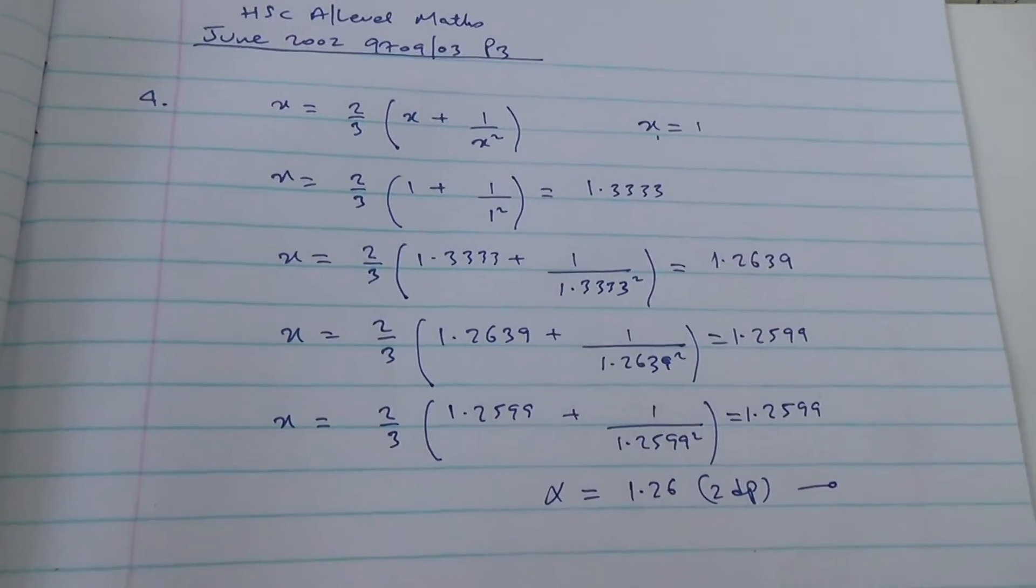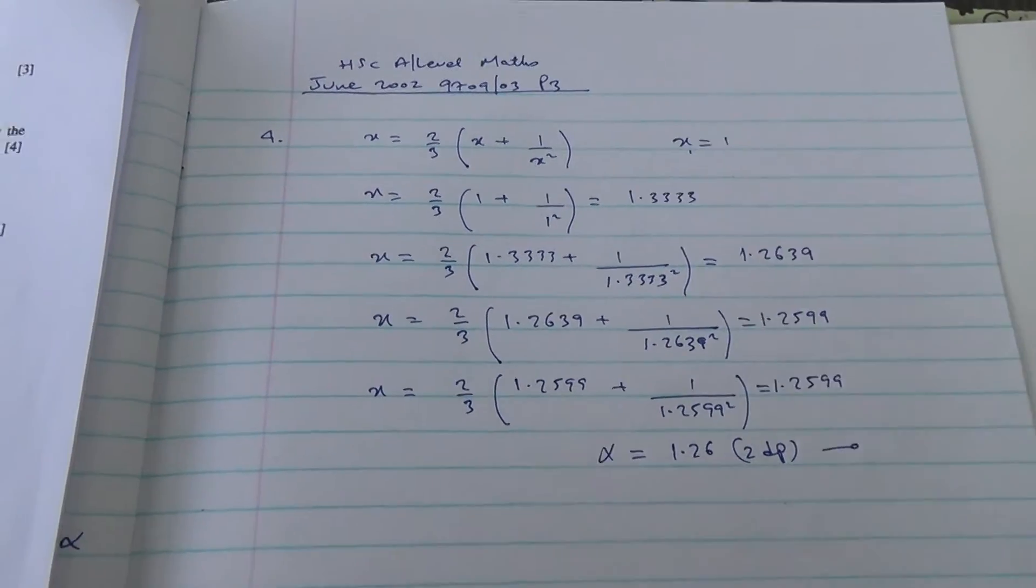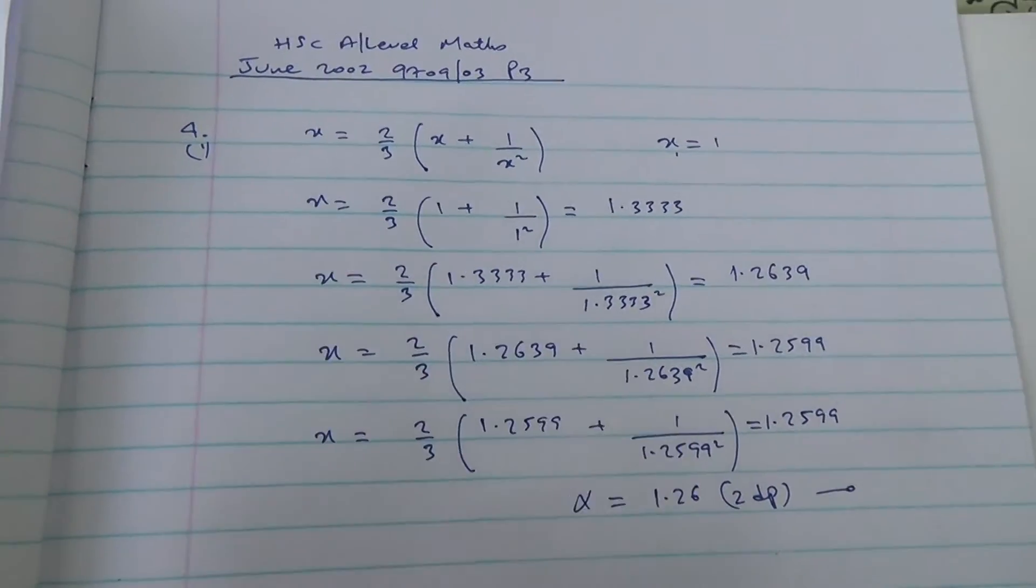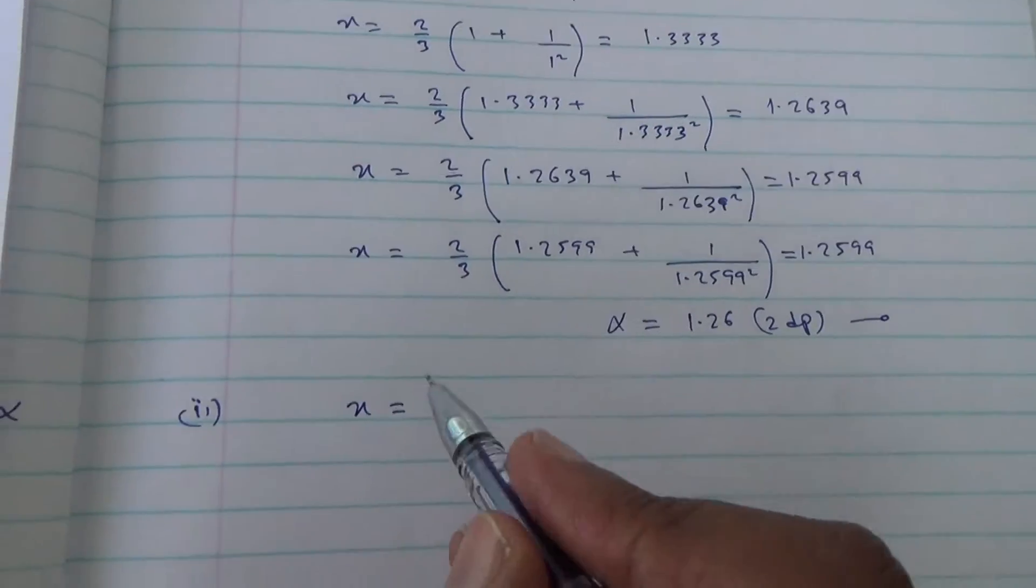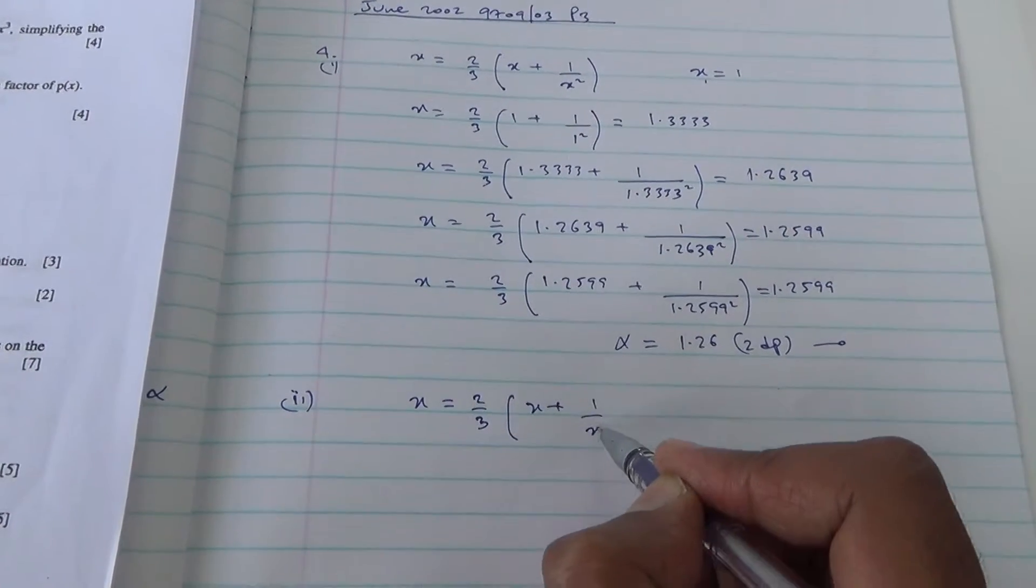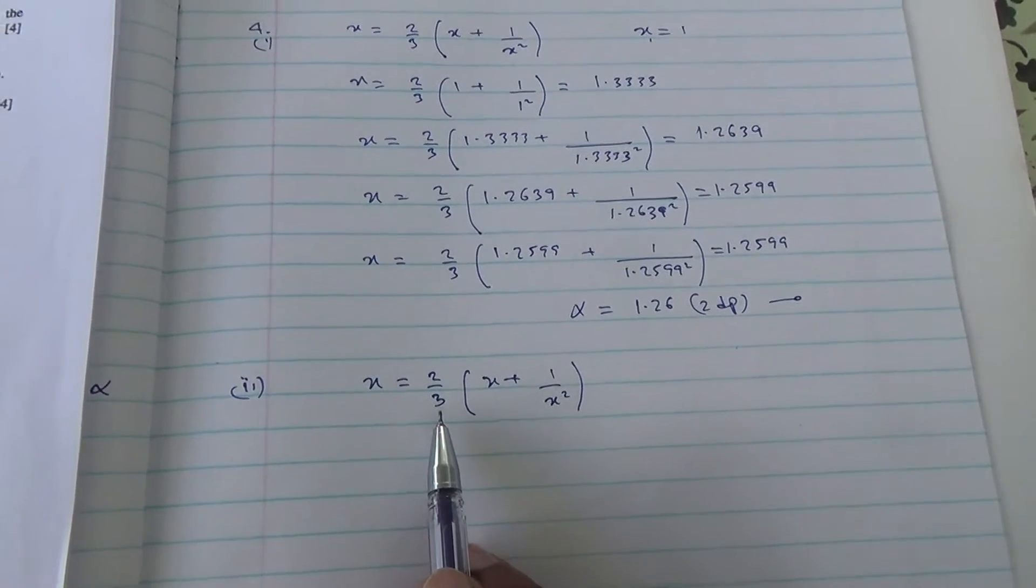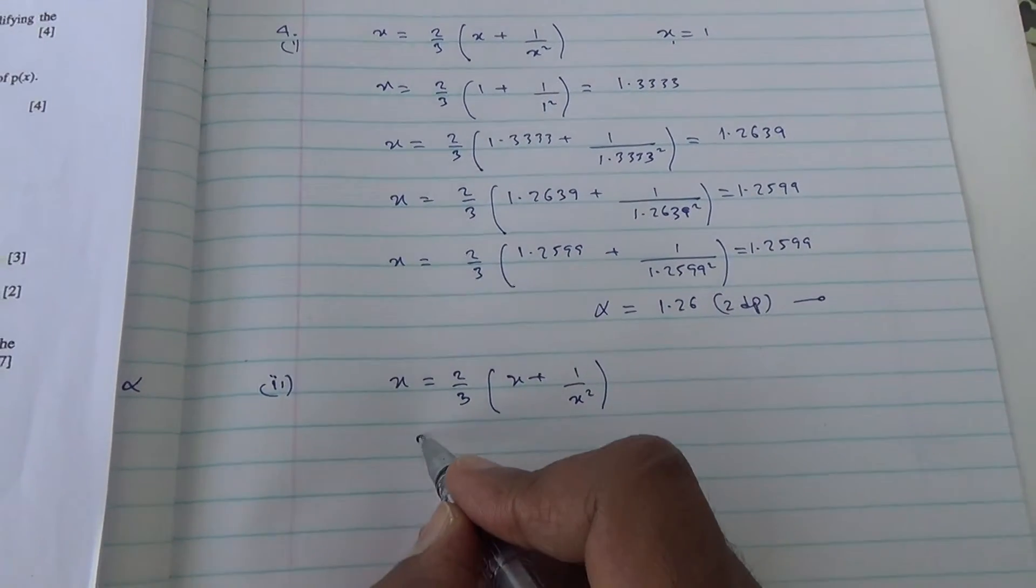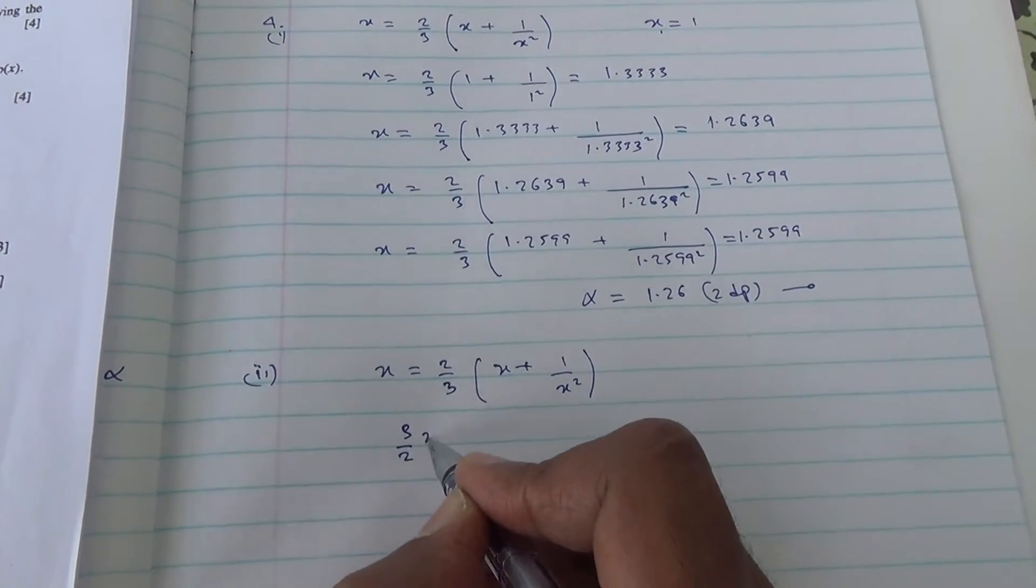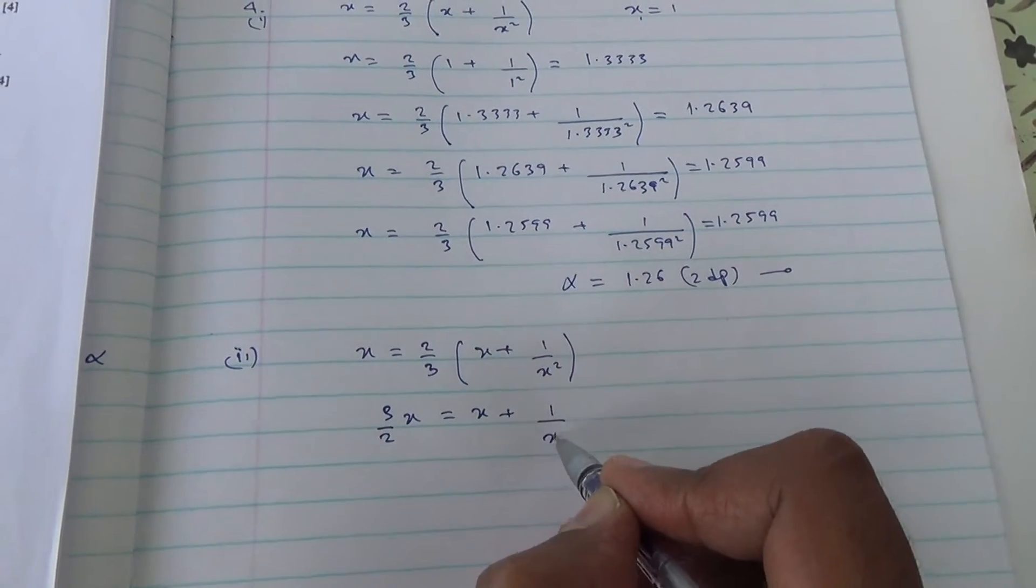Now for the second part of the question, we need to find a stated equation satisfied by alpha. So initially we have this equation here as x is equal to 2 thirds times x plus 1 over x squared. How can we state another equation? The 3 goes on top here, becomes x multiplied, so this is going to be 3, and the 2 goes down.